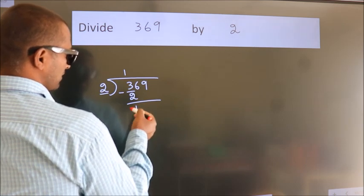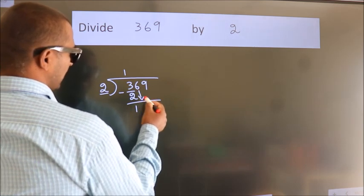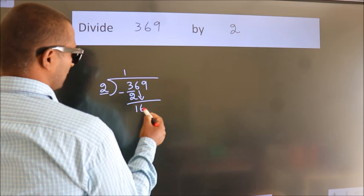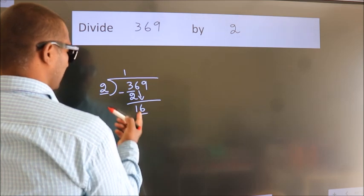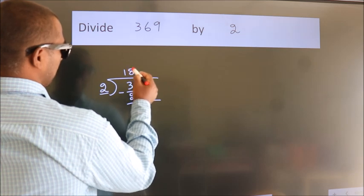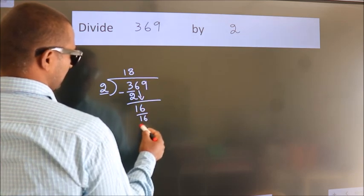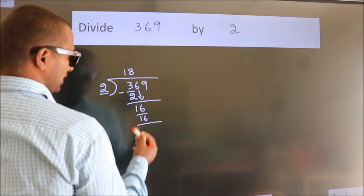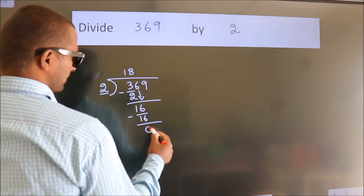After this, bring down the beside number. So, 6 down. So, 16. When do we get 16? In 2 table, 2 8s, 16. Now, we subtract. We get 0.